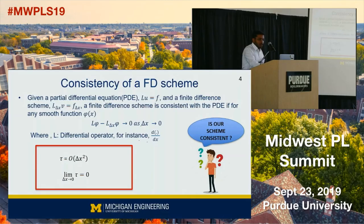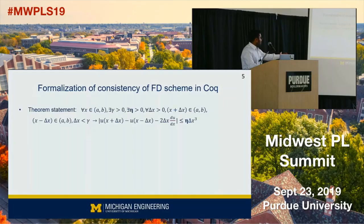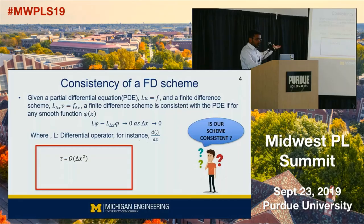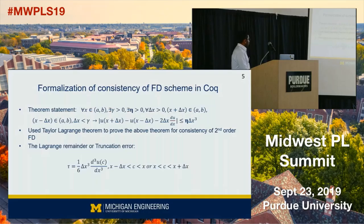A major part of our project was to translate this into a formal setting. We checked this mathematical formulation into a proof assistant called Coq. We have a theorem statement of this form, which essentially says there is order delta x squared. We use the Taylor-Lagrange theorem to prove the statement of consistency, and a Lagrange remainder is of order delta x squared.